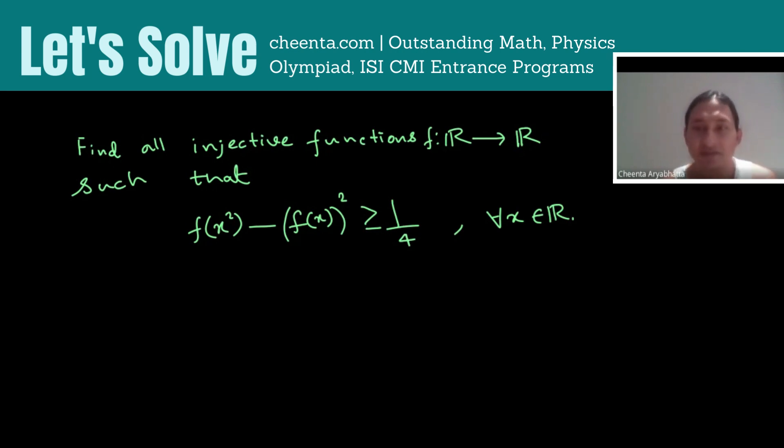This is kind of like a functional equation, so when you get functional equations, what do you do? You start by putting the most basic values, which are zero and one in this case. There's another reason for trying zero and one: x² = x has precisely two solutions, zero and one. And why is that important? Because then the left-hand side of this inequality becomes something like f(c) - f(c)² which is probably easier to deal with.